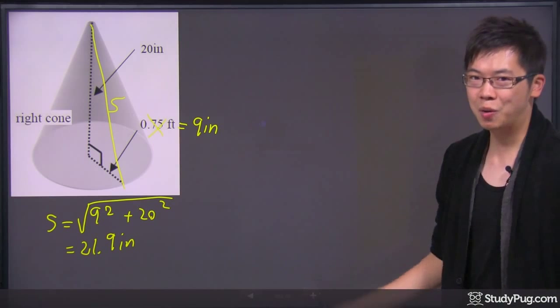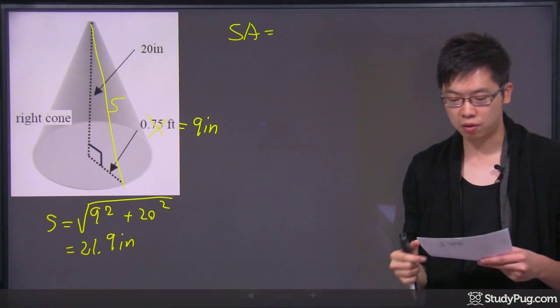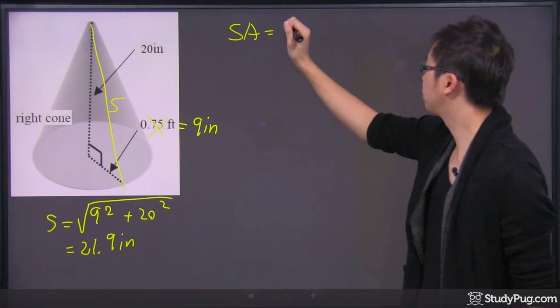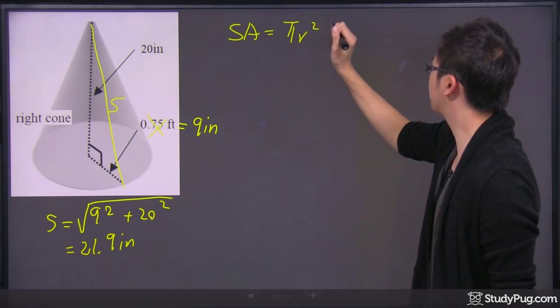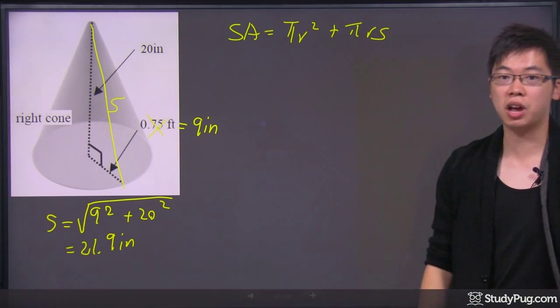Once we have everything ready, let's go ahead and calculate the surface area. Surface area of the cone, we do have an equation for this. It's the πr² plus the πrS. That's why we need the slanted side.